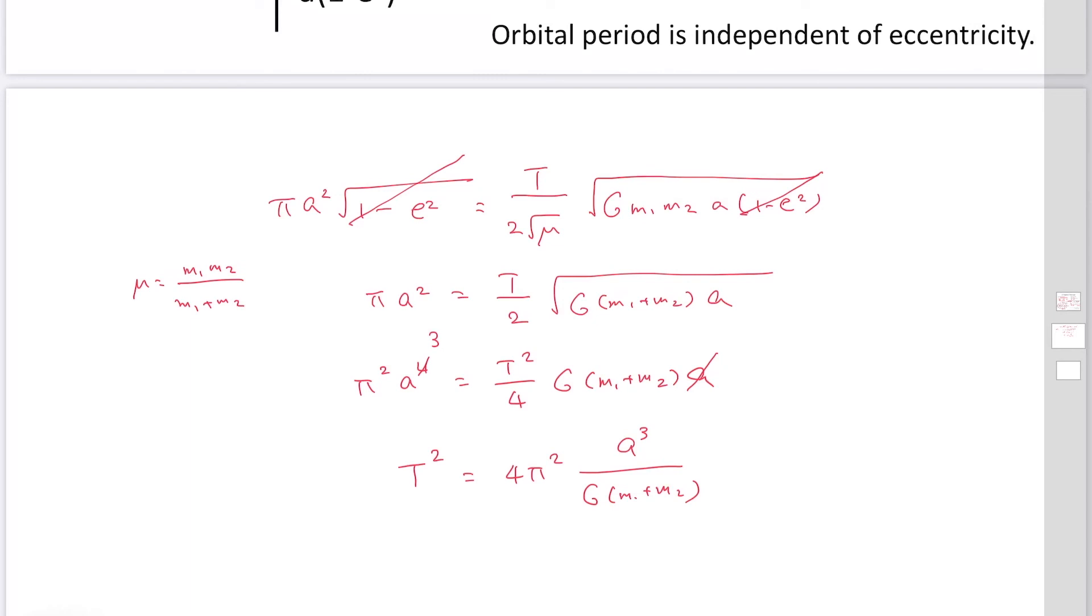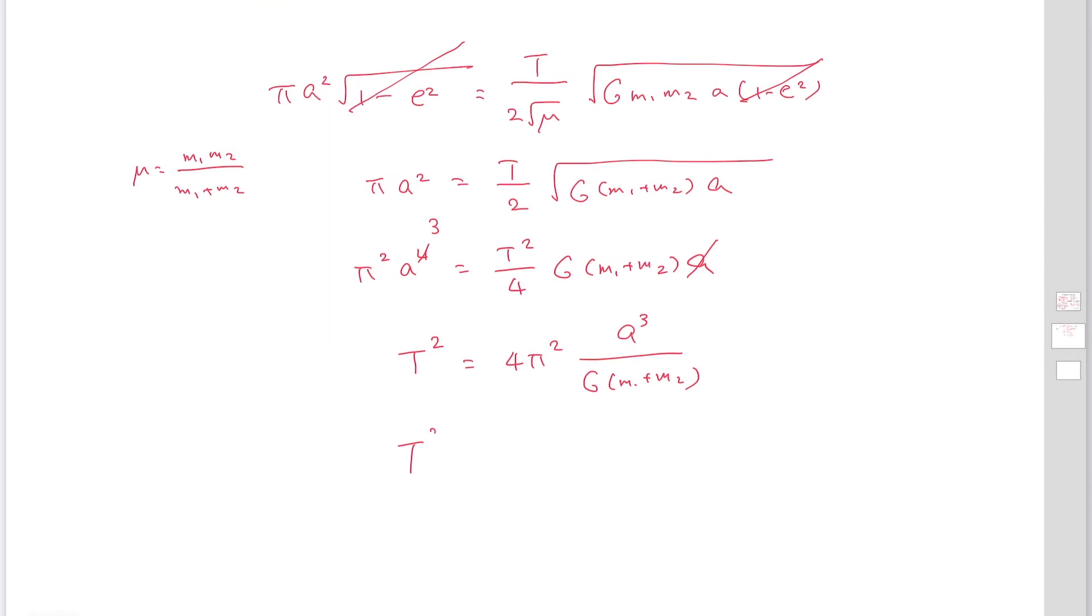So from this equation, you can find T² is proportional to a³. This is Kepler's third law.